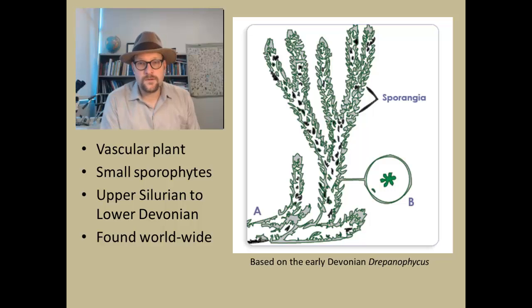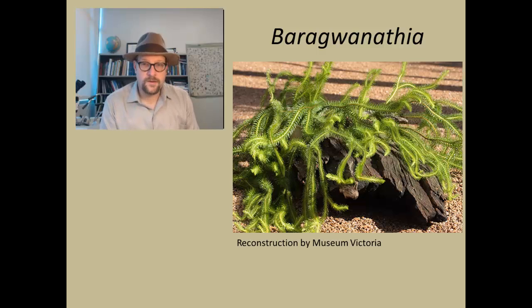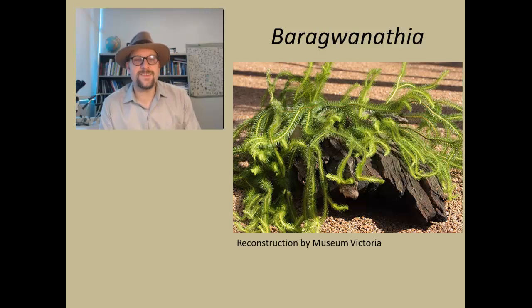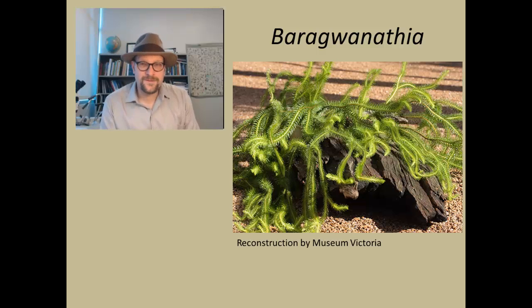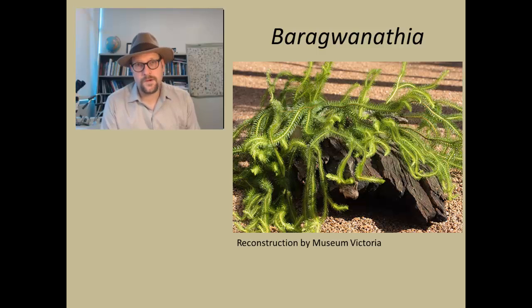Now they're not very big. Here's a reconstruction of Baragwanathia by the Museum of Victoria in Australia — a really cool reconstruction. If you saw this growing you'd probably think it was some queer little ferny, mossy plant, but this gives you a good sense of what these early land plants were starting to look like. These were still reproducing in the water, only found in moist areas, and they don't necessarily have a thick cuticle, so these are sort of fossil bryophytes.